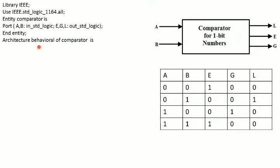The style of architecture is behavioral and the entity name is comparator. We initialize it using the statement begin, then we write a process statement because we are dealing with behavioral style of modeling. In the process we have two inputs A and B, so we write process(A, B). We initialize the process statement using begin, and now we proceed with writing the first if statement: if A is greater than B.